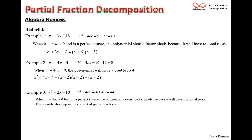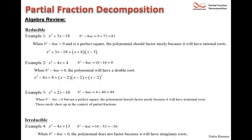When irreducible, b² - 4ac < 0. For example, x² - 4x + 13 has b² - 4ac = -36, giving ±6i — imaginary roots. The polynomial doesn't factor over the reals; it has imaginary roots.